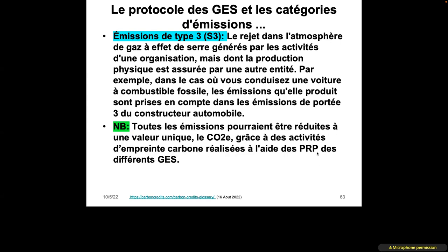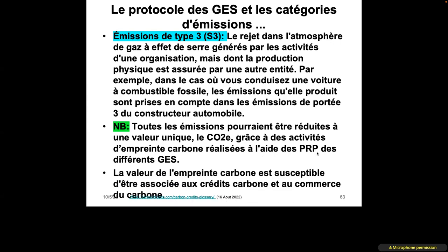It is important to note that all emissions can be reduced to a single value — the carbon equivalent unit we discussed. This allows conversion of whatever type of greenhouse gas emitted — whether Scope 1, 2, or 3 — into carbon equivalent using the global warming potential table of different greenhouse gases. The value of the carbon footprint can be associated with the carbon credit and carbon trading. That is the advantage of understanding these different aspects.